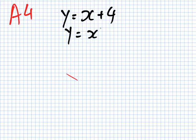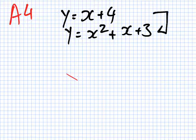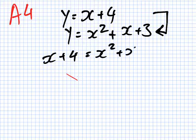The best method to use here will be substitution. They're both equal to y, so I can make them equal to each other. So I have x plus 4 equals x squared plus x plus 3.